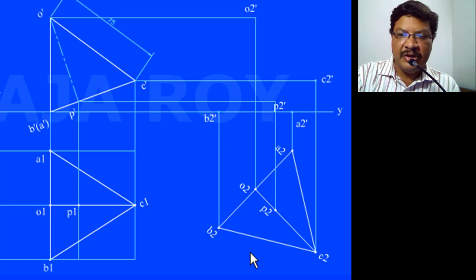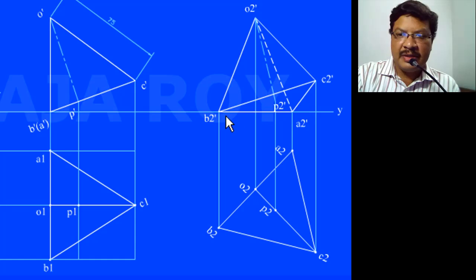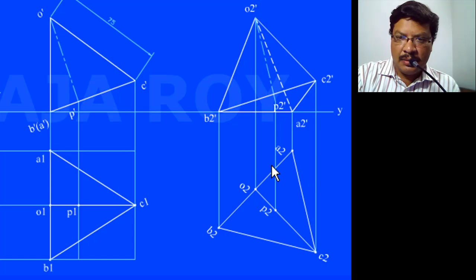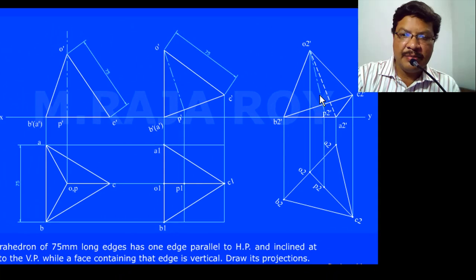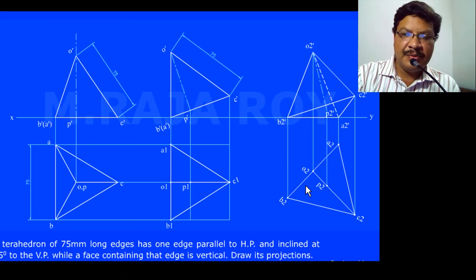When viewing the final projection, the ABC base is visible. The completely invisible edge is A2O2 — this particular face edge is completely invisible, while the base is visible. The final front view and top view are now obtained.